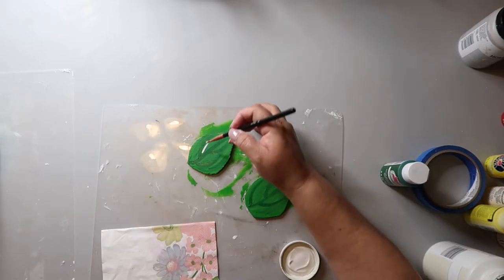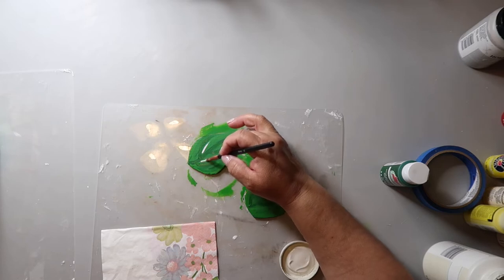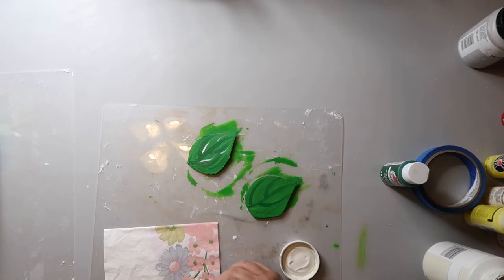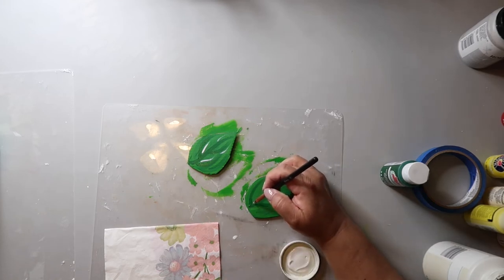I add some white paint to kind of highlight some of the areas of the leaf. And if you get too heavy handed with this, don't worry, you can always soften it up with one of the green paints you just used.